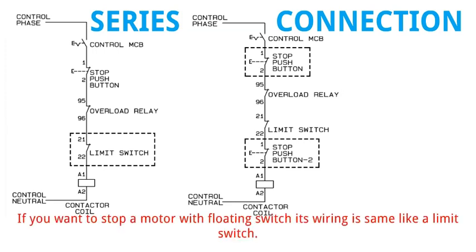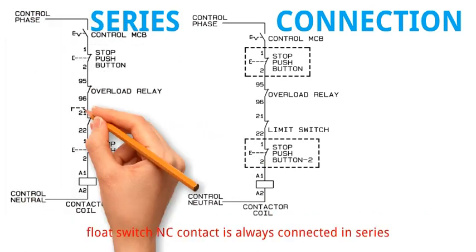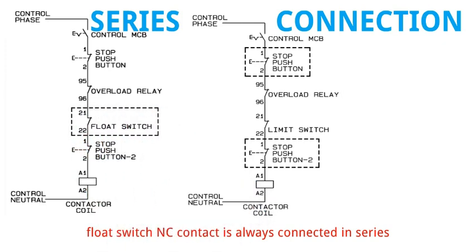If you want to stop a motor with floating switch, its wiring is same like a limit switch. Float switch and C contact is always connected in series.